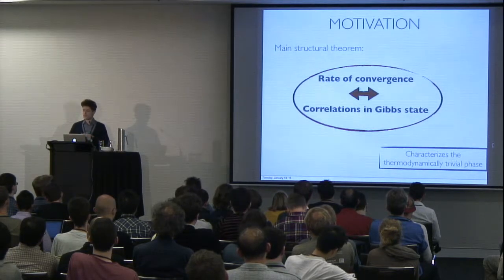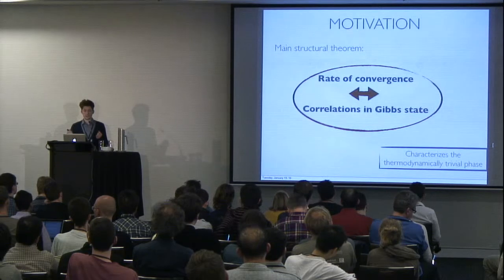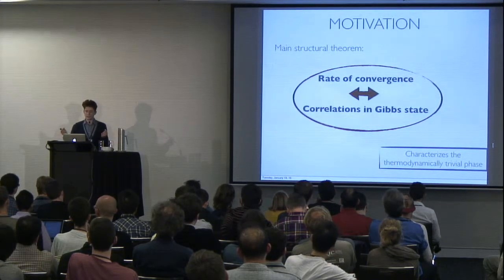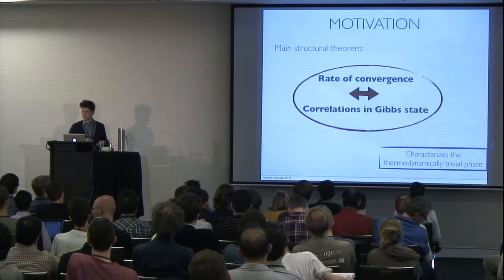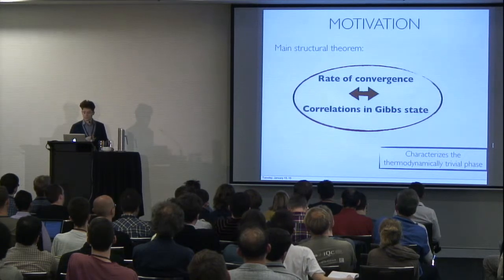And vice versa, if you have exponentially decaying correlations, so very few correlations between distance observables in your system, then it implies that these constructed Gibbs samplers, these constructed algorithms, will converge rapidly.